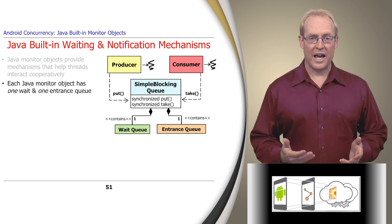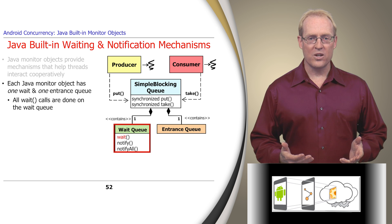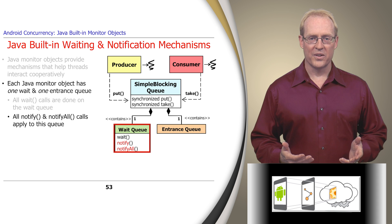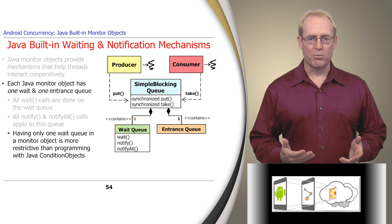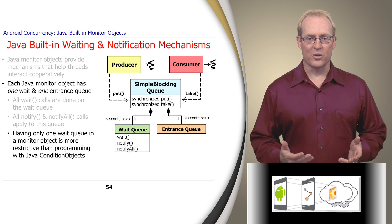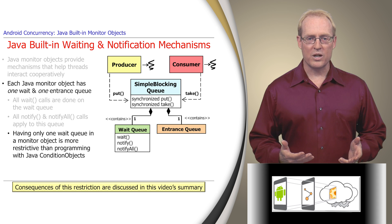Each Java monitor object has one wait queue and one entrance queue. All calls to wait are placed in the wait queue, and all notify and notifyAll calls also apply to this queue. Having only one wait queue in a built-in monitor object is more restrictive than programming with Java condition objects, which allow an object to have multiple wait queues. Some consequences of this restriction will be discussed in this video's summary.